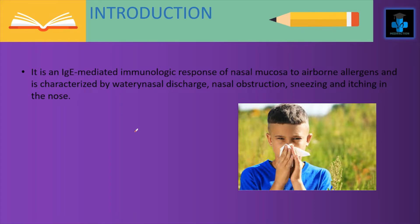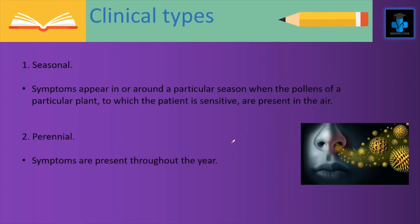Allergic Rhinitis is an IgE mediated immunological response of the nasal mucosa to airborne allergens, characterized by watery discharge, nasal obstruction, sneezing and itching in the nose. Clinically it can be divided into two types: seasonal and perennial. In seasonal, symptoms appear around a particular season when pollens of a plant to which the patient is sensitive are present in the air, whereas in perennial the symptoms are present throughout the year.